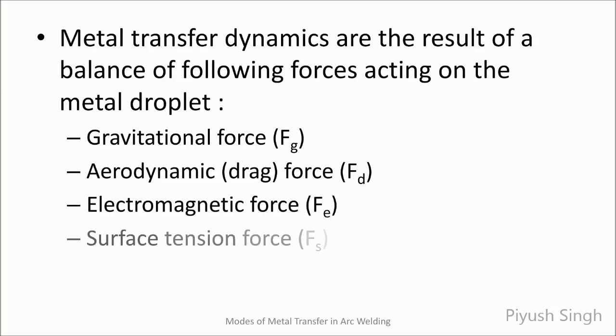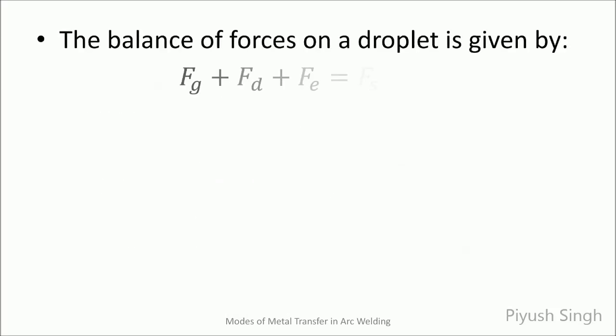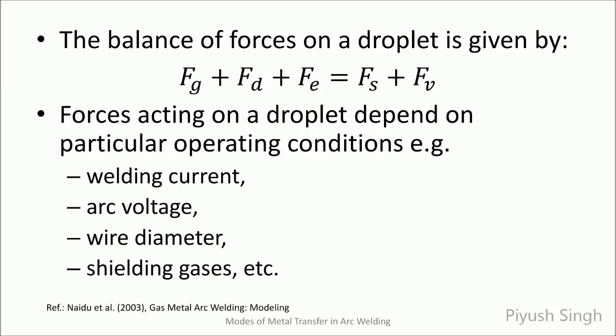Transfer of metal droplets from the electrode to the weld pool happens under the influence of a number of forces. The mode of transfer depends on the balance of these forces and also which force plays the most dominant role. These forces are: gravitational force, aerodynamic or drag force, electromagnetic force, surface tension force, and vapor jet forces. The balance of these forces is given by the equation shown here. The operating conditions control these forces, the most important being the welding current.